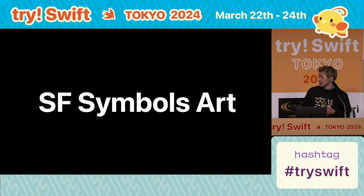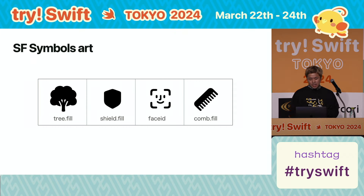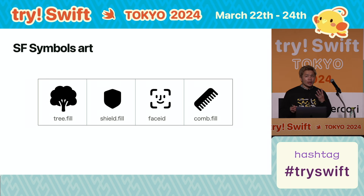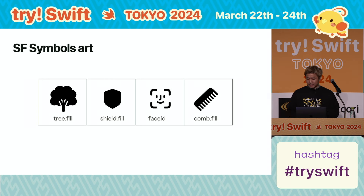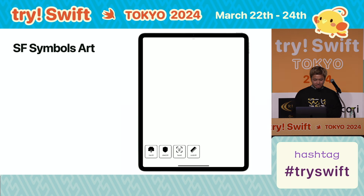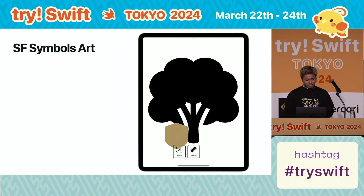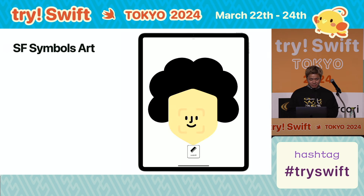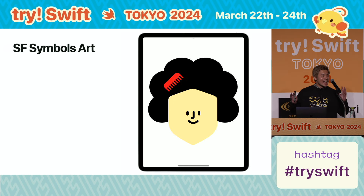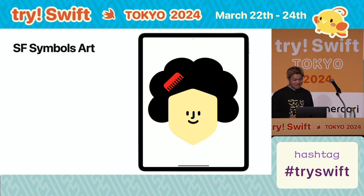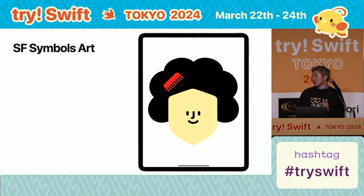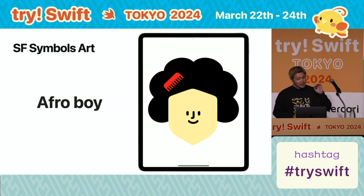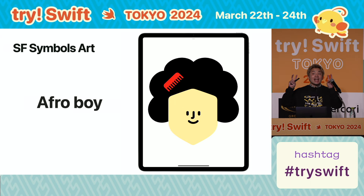Let me give you an example. There are 4 symbols. Like I said before, I will combine them. Imagine what it's going to look like. This is it. These 4 symbols transformed into Afro Boy. This is my SF Chimbles Art.